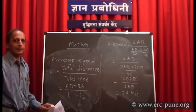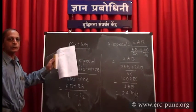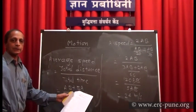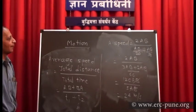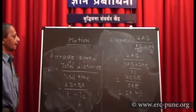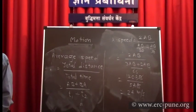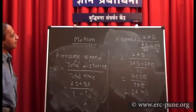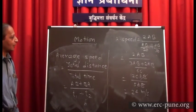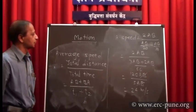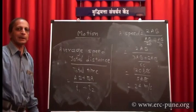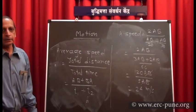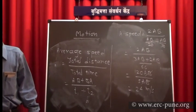While calculating average speed, you must use total distance divided by total time, calculating the times separately. One important point: average speed can never equal zero. But average velocity can equal zero if the body returns to its original position, because in that case displacement is zero.